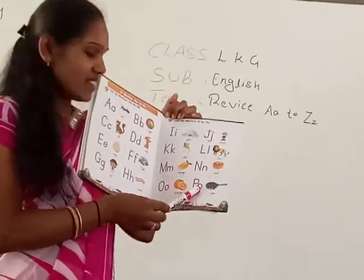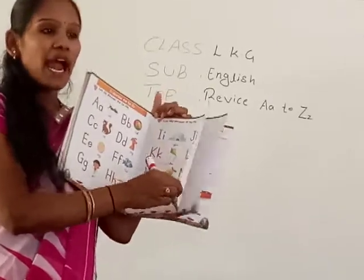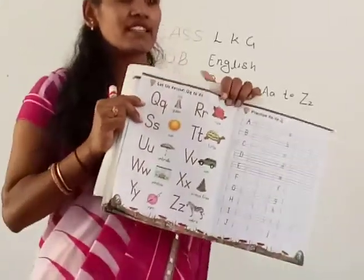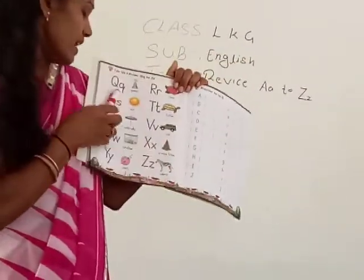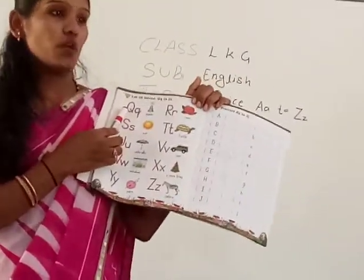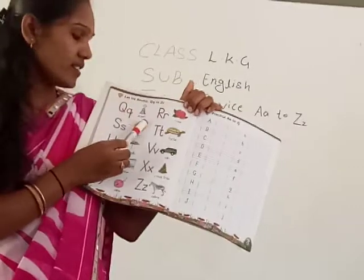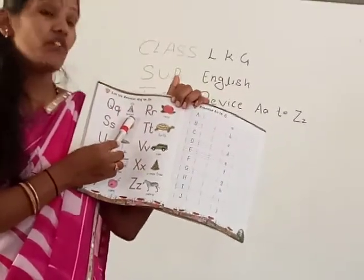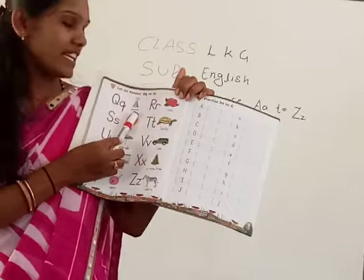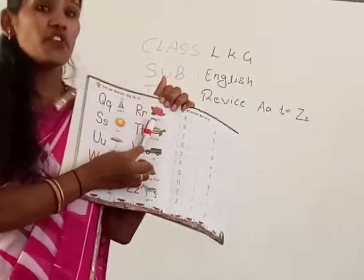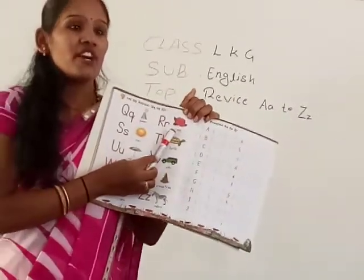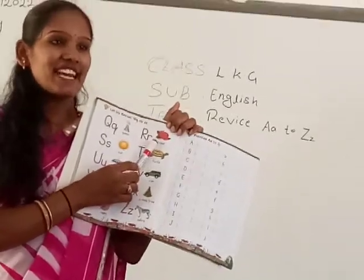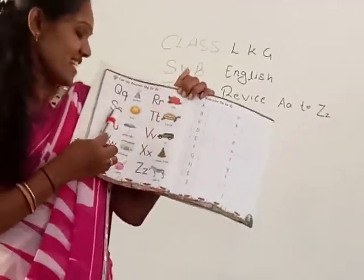P for? Pan. P for Pan. And this is Q. Q for Queen. Q for what, students? Queen. R for Rose. Girls like roses, right? Yes. S for?